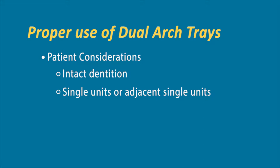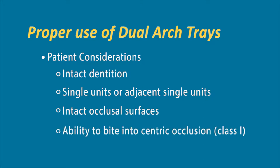If a patient has intact dentition but their occlusion is not proper—maybe they have an open anterior bite—you want to have intact occlusal surfaces. Of the remaining unprepped teeth, you want to make sure they're actually touching. Test the patient: have them open and close, and visibly inspect to make sure the remaining teeth actually contact in occlusion. Also, ability to bite in centric occlusion—we really recommend Class I. Class II or Class III occlusal schematics get more complex, where a full arch type impression is preferable so we have more teeth to articulate to.